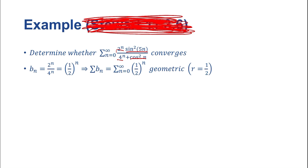So we're going to isolate that and make it our b sub n. b sub n is going to be 2 to the n over 4 to the n, and that's really easy to see — that's a geometric series of 1 half to the n. So the series of b sub n is the series from n equals 0 to infinity of 1 half to the nth power. This is a geometric series with r equals 1 half, so we can determine that it converges. That's a reasonable guess that our original series is going to converge as well.